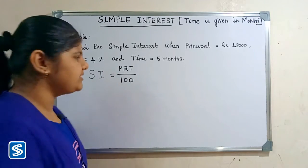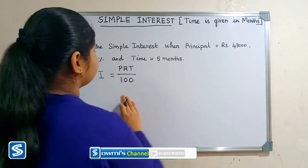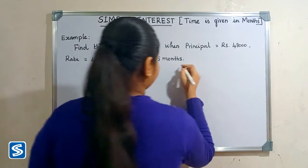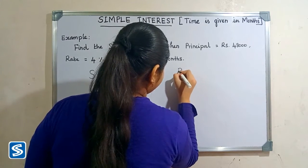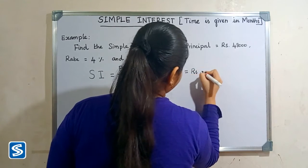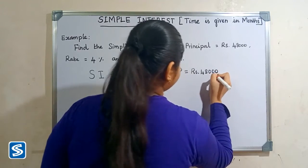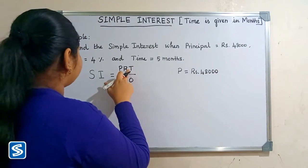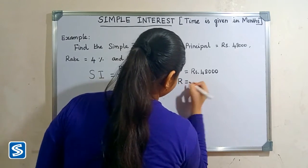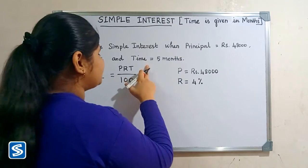Here P is the principal amount, R is the rate of interest, and T is the time period. In this example, the principal amount is rupees 48,000, rate of interest is 4 percentage per annum, and the time period is 5 months.